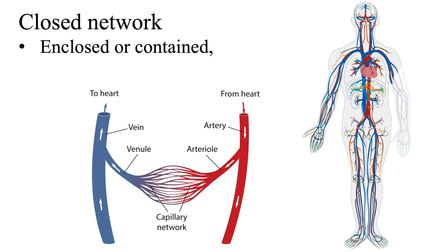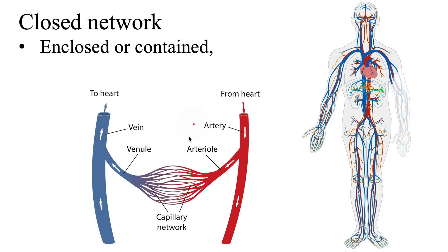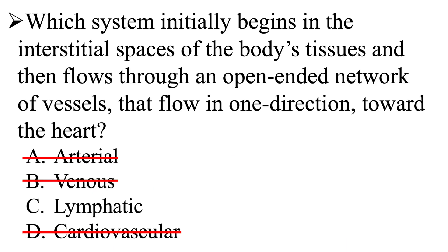Another thing to point out: you have the arteries on the arterial side, and the veins on the venous side — which means we can eliminate A and B, arterial and venous, because they are part of the cardiovascular system, which is a closed network. We are looking for an open-ended network of vessels that flow in one direction toward the heart.